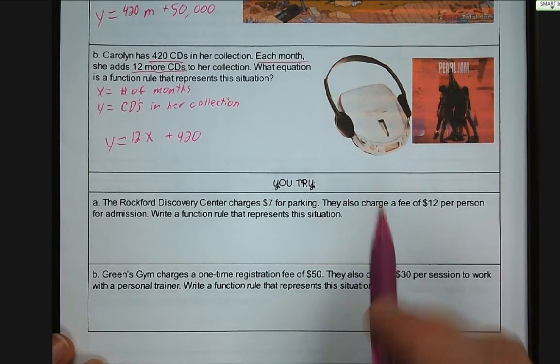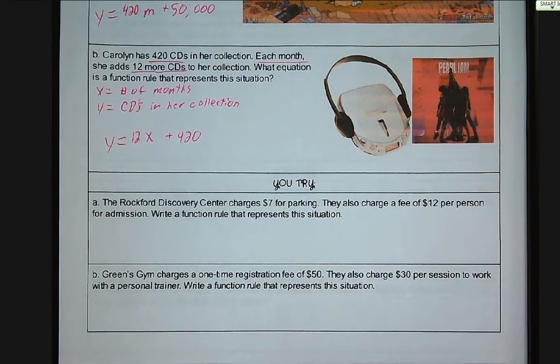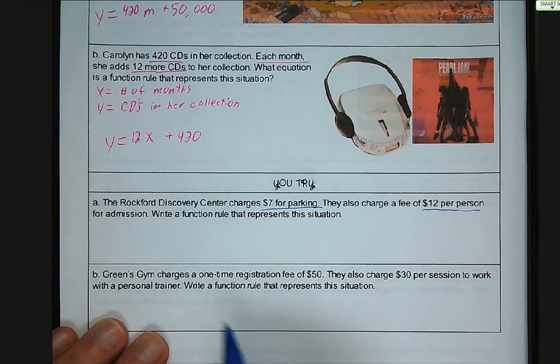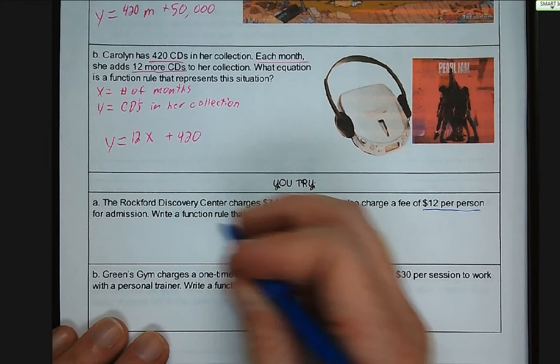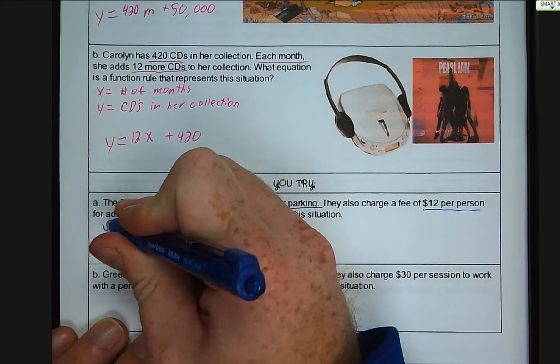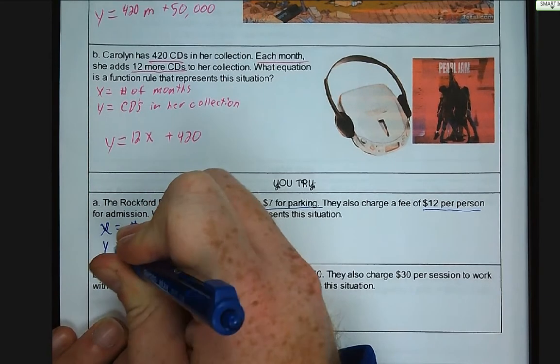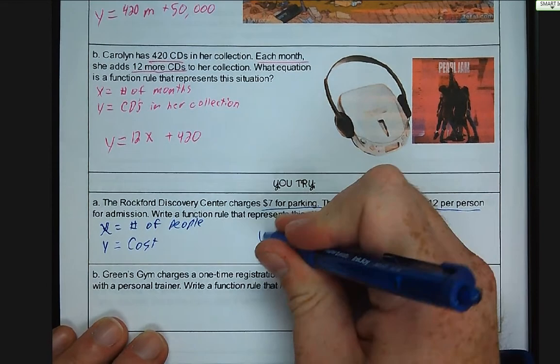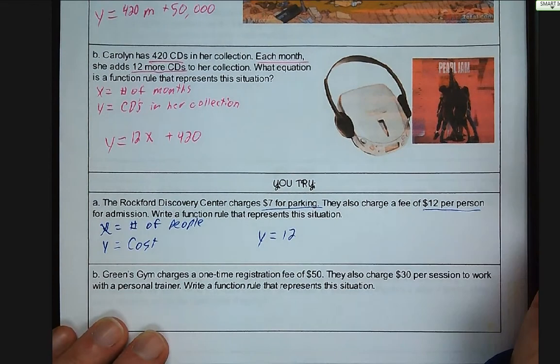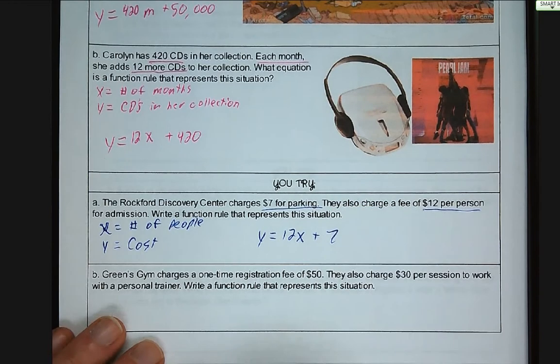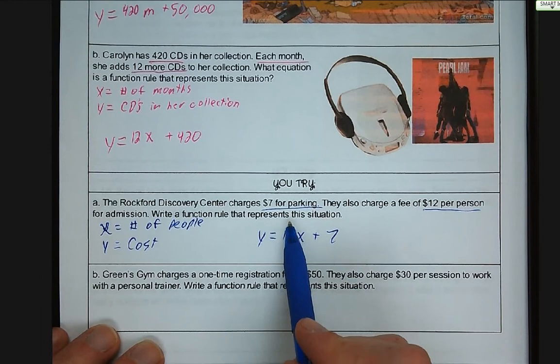The Rockford Discovery Center, you guys try the next two. The Rockford Discovery Center charges $7 for parking. They also charge a fee of $12 per person for admission. Write a function rule that represents this situation. So we're looking for the total cost. X is number of people, Y is cost. So the cost is equal to $12 per person times the number of people, plus $7 for parking, because you're only paying that fee once to park.